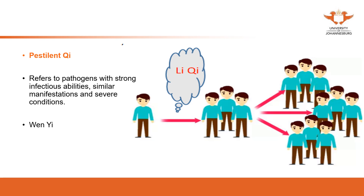Pestilence Qi also has many names in Chinese. You may see 'Wen Yi' at the bottom. If you see Wen Yi, they take the word 'Yi,' and together 'Yi Li,' or even 'Yi Qi.' So these names also refer to Pestilence Qi.